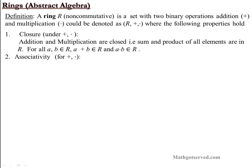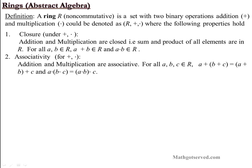Next is associativity. For rings, the associative property applies to both addition and multiplication. If you're adding or multiplying three elements from a set, the grouping does not matter — it does not alter the result. So A plus (B plus C) is the same as (A plus B) plus C. The associative property also applies for multiplication in a non-commutative ring.